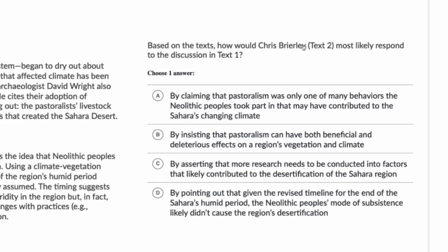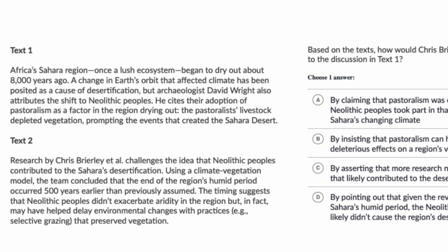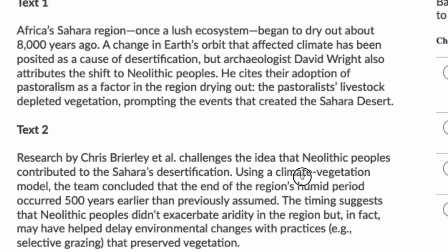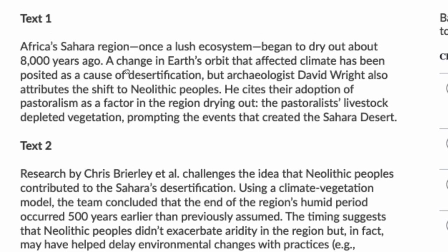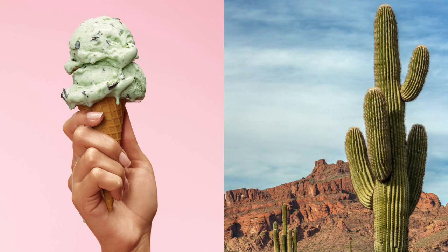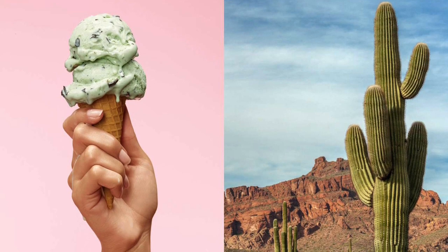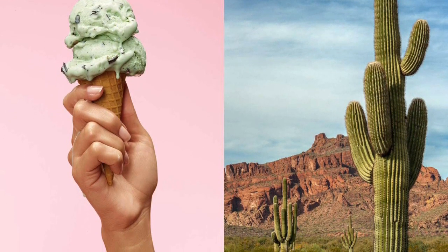So how would the person in Text 2 most likely respond to the discussion in Text 1? Text 1 says Africa's Sahara region — once a lush ecosystem — began to dry out about 8,000 years ago. A change in Earth's orbit that affected climate has been put forth as a potential cause of desertification, which is the process by which deserts are created.